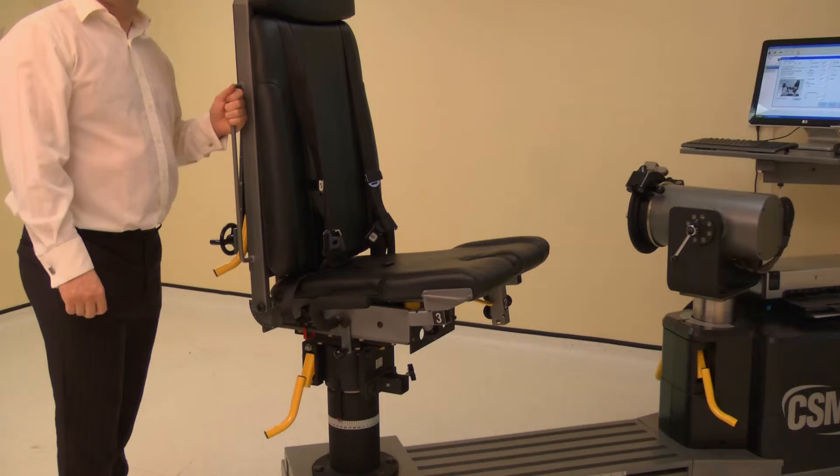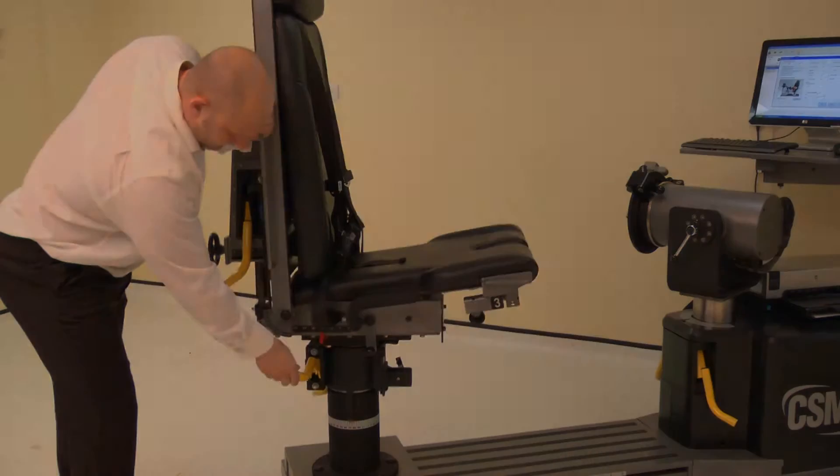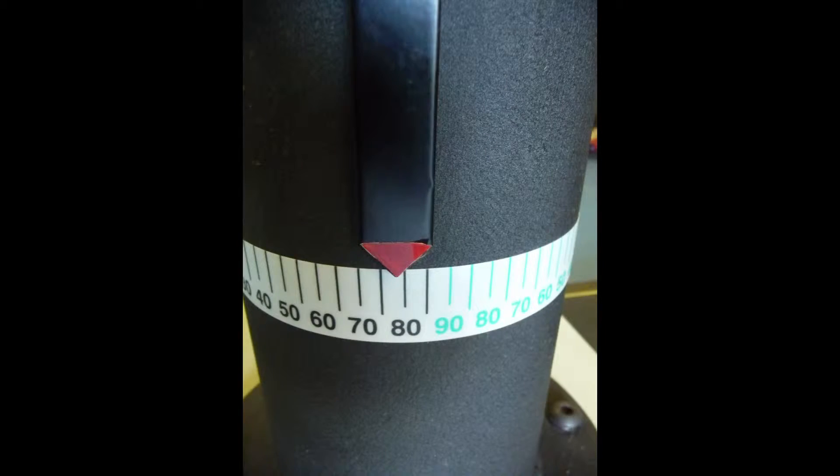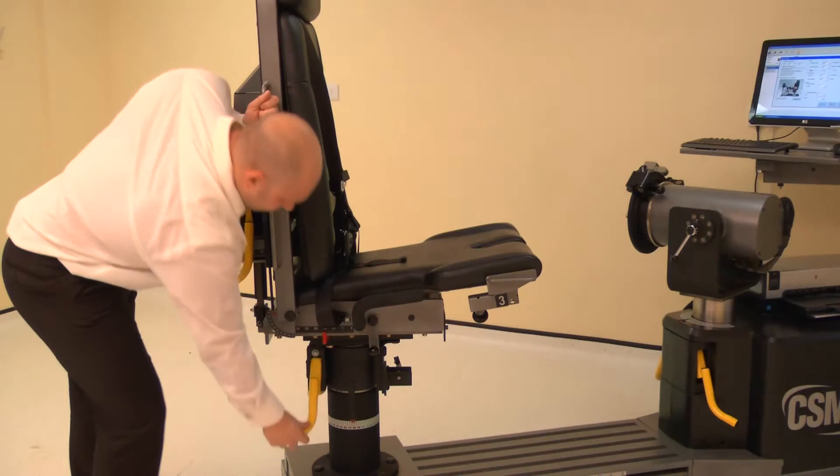Now adjust the chair rotation. Lift the locking handle and rotate the chair. Rotate the chair to 82 degrees on the black scale. Ensure both locking handles are pushed down to secure.